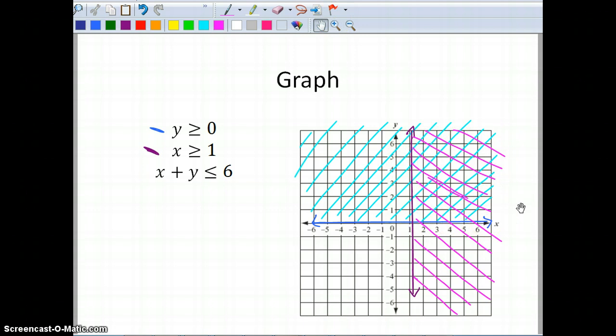Now let's look at our last one. We have x plus y is less than 6. I'm going to subtract x from both sides. So I have y is less than or equal to negative x plus 6. Graph this one with green.